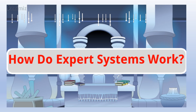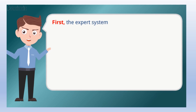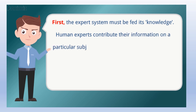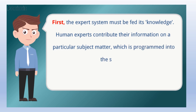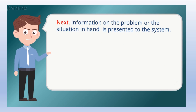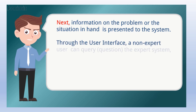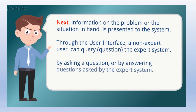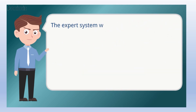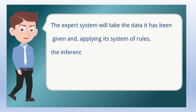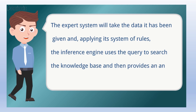How do expert systems work? First, the expert system must be fed its knowledge, where human experts contribute their information on a particular subject matter which is programmed into the system. Next, information on the problem or situation in hand is presented to the system through the user interface. A non-expert user can query or question the expert system by asking a question or by answering questions asked by the expert system. The expert system will take the data it has been given and apply a system of rules, where the inference engine uses the query to search the knowledge base and then provides an answer or some advice to the user according to the case.